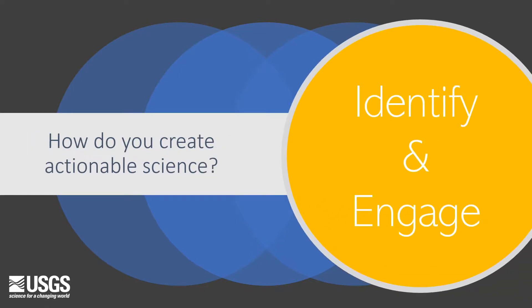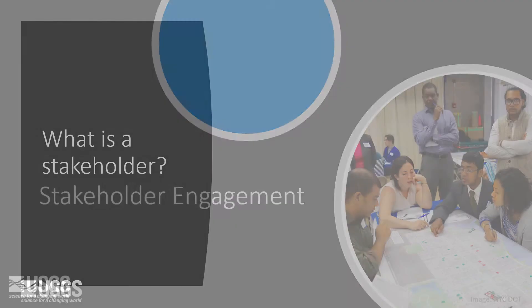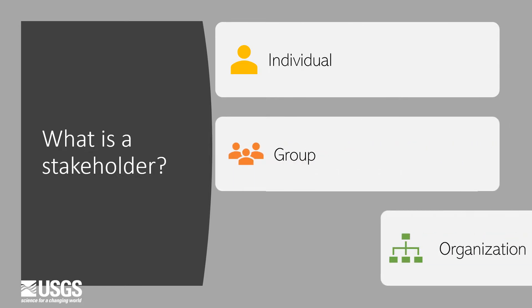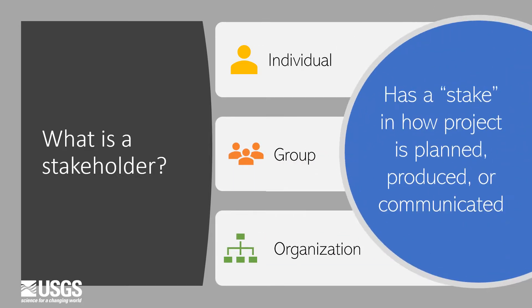One key step in creating actionable science is identifying and engaging with the science end user during the production of the science. This is a type of stakeholder engagement. A stakeholder is an individual, group, or organization that is impacted by the outcome of a project. They have a stake in how the project is formulated, enacted, and communicated.